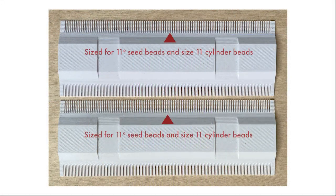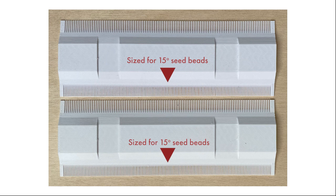The loom includes pronged, two-sided combs with different spacing. One side, sized roughly for 11-0 seed beads and size 11 cylinder beads, which are quite close in size, and the other, sized roughly for 15-0 seed beads. I say roughly because there are natural size variations based on the manufacturer and on the kind of finish on the bead.